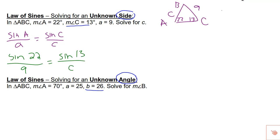sine of C sine of 13 over side c. And since we're solving for side c we would just cross multiply. I like to use the zigzag method where I multiply the two that are across from each other. 9 times sine of 13 over the one that's by itself sine of 22 will equal what we're solving for.